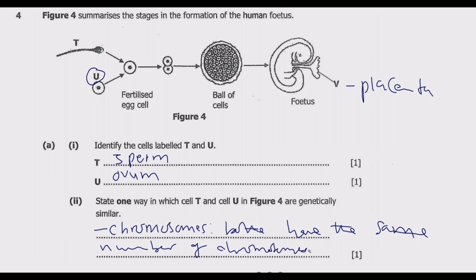In other words, they are haploid cells. This means that they contain half the number of chromosomes of a normal diploid cell. A diploid cell has 46 chromosomes, while a haploid cell has 23 chromosomes. So 23 chromosomes is half the normal chromosome number of a diploid cell. That's the first similarity.